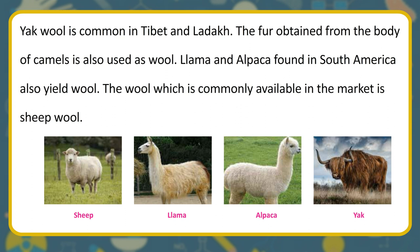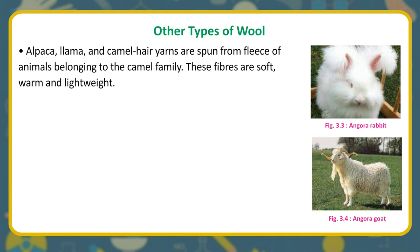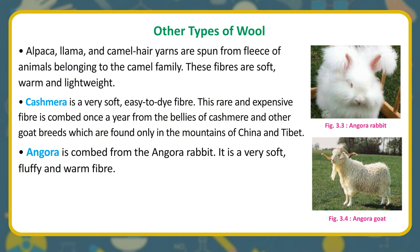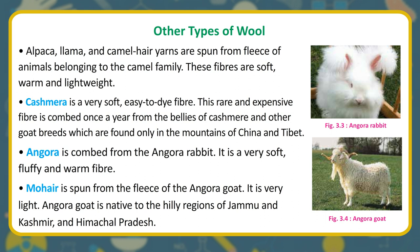The wool which is commonly available in the market is sheep wool. Alpaca, llama, and camel hair yarns are spun from the fleece of animals belonging to the camel family — these fibers are soft, warm, and lightweight. Cashmere is a very soft, easy-to-dye fiber, combed once a year from the bellies of Kashmir and other goat breeds found only in the mountains of China and Tibet. Angora is combed from the angora rabbit — it is a very soft, fluffy, and warm fiber. Mohair is spun from the fleece of the angora goat and is very light. The angora goat is native to the hilly regions of Jammu and Kashmir and Himachal Pradesh.